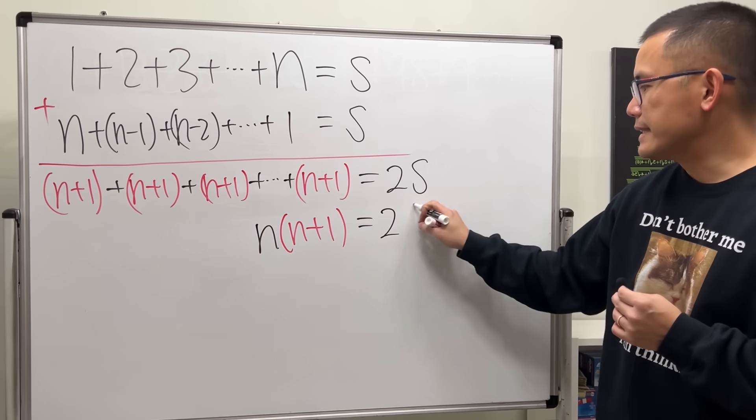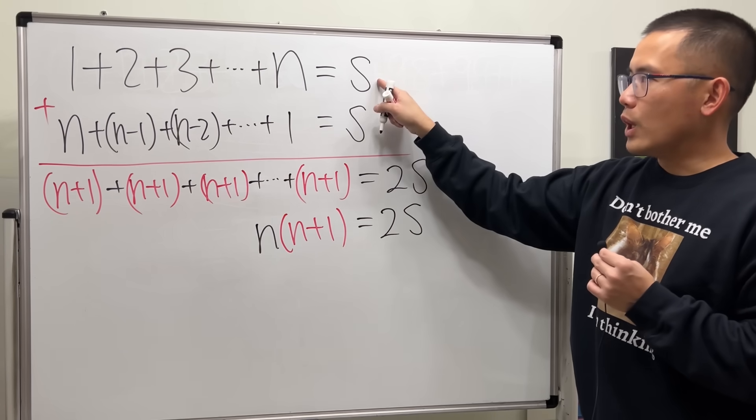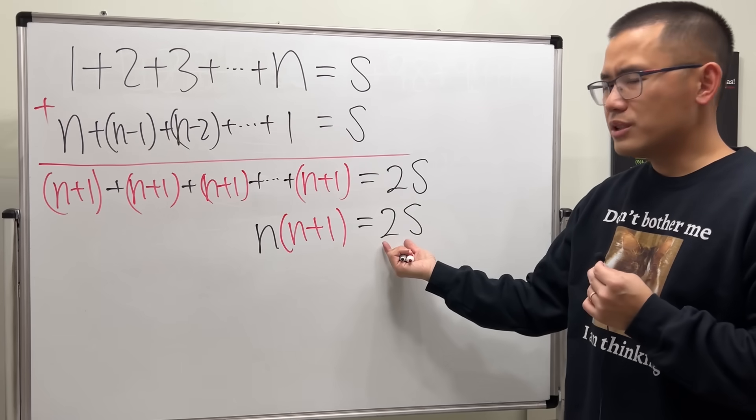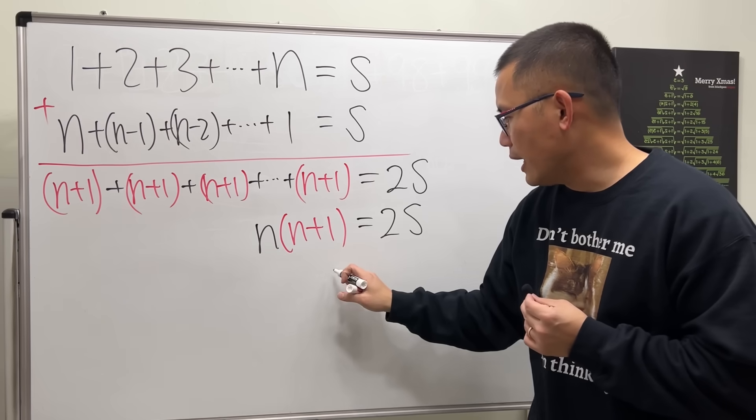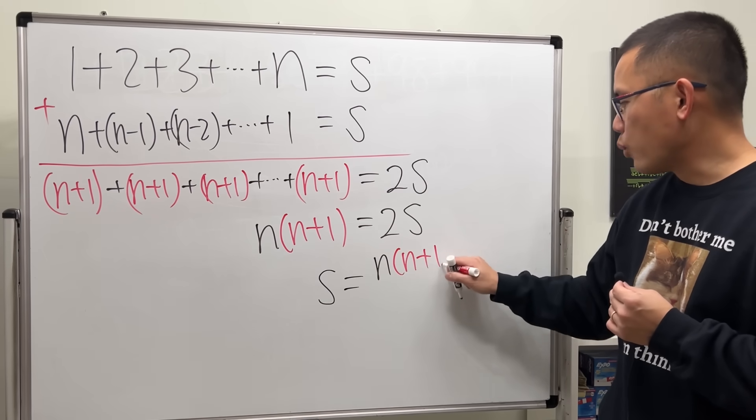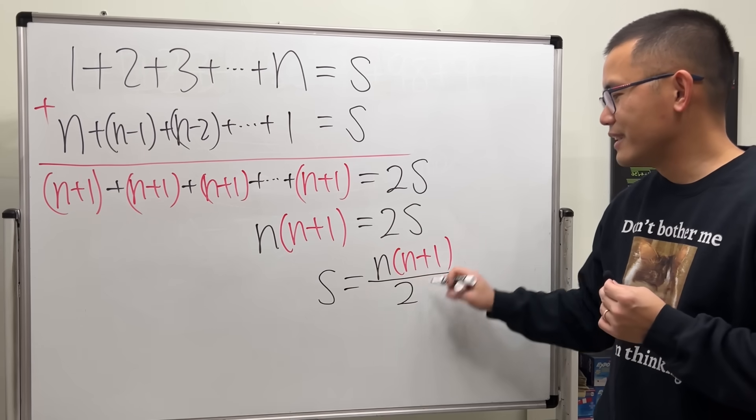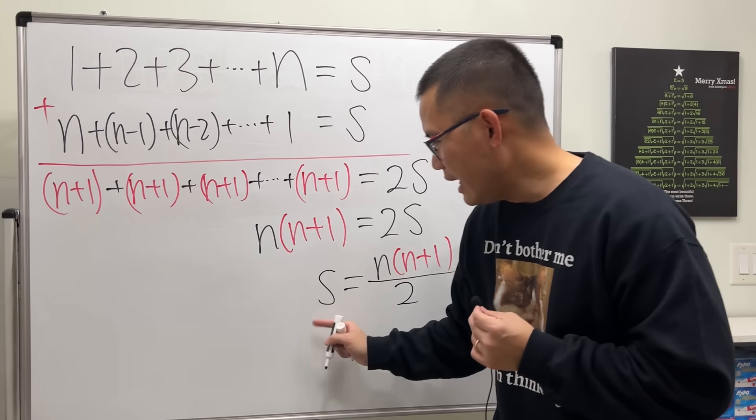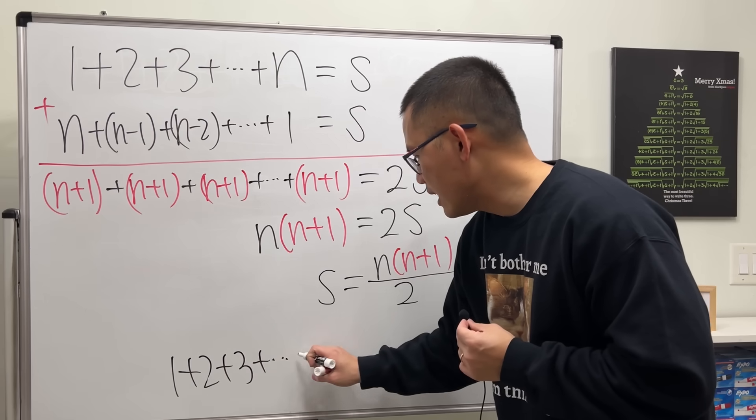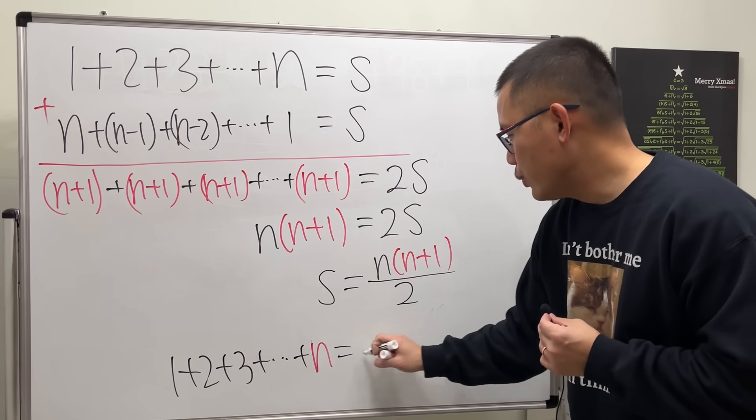Now I want to figure out what S is, because that's the sum that we want. We can just divide both sides by 2. So S is equal to n times (n + 1) over 2. And ladies and gentlemen, S is 1 + 2 + 3 + ... up to n, and that's equal to n times (n + 1) all over 2. And that is the formula.